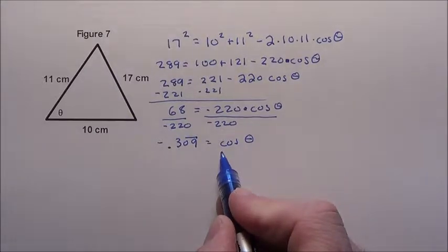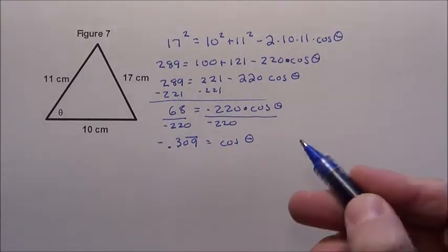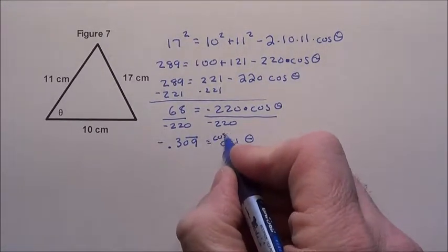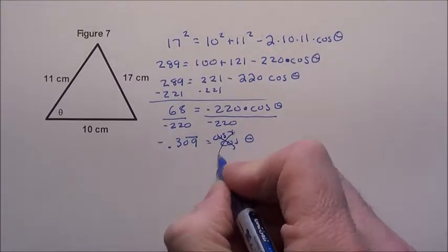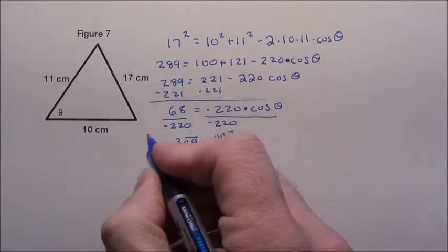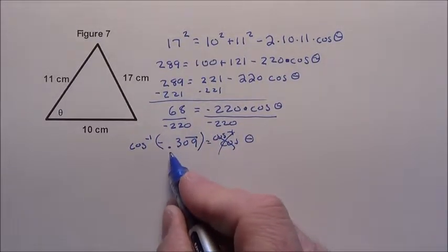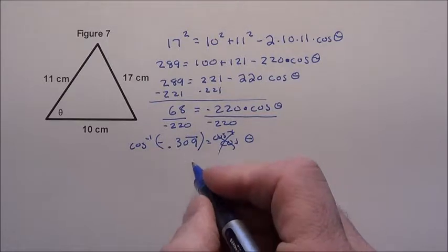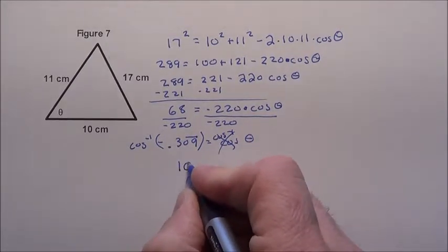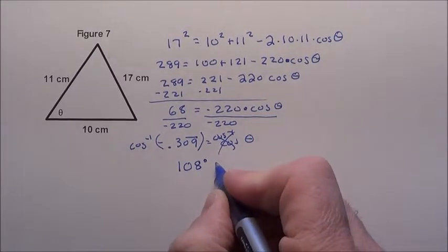You've got to get rid of cosine. To get rid of cosine, we simply take the inverse cosine of that cosine. It goes away. But if I do it to this side, I must do it to this side. And when I take the inverse cosine of negative .3090909, I get approximately 108 degrees.